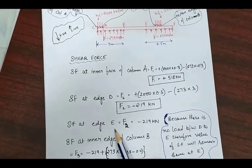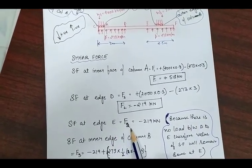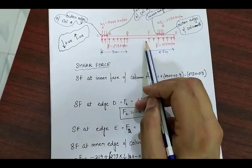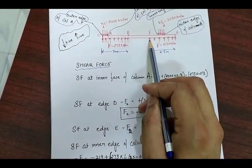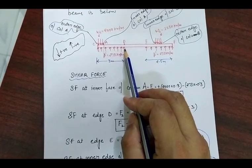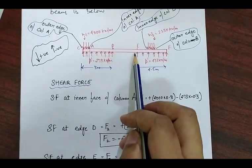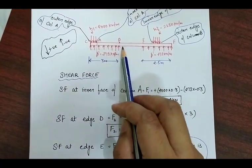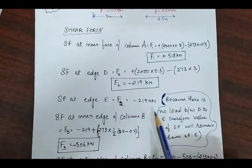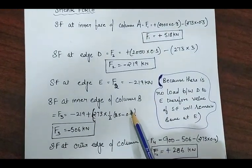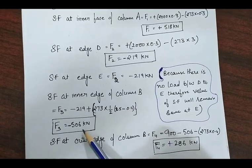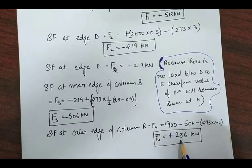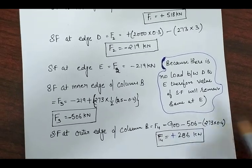At edge E, the shear force F2 remains the same as at point D, which is minus 219 kilonewton, because there is no additional load between points D and E. The shear force at the inner edge of column B is minus 506 kilonewton, and at the outer edge of column B it is equal to positive 286 kilonewton.